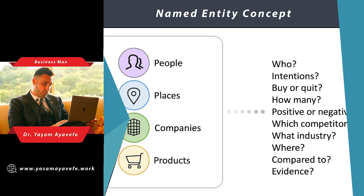Lexical semantic disambiguation is one of the biggest challenges in natural language processing. Indeed, natural language, unlike formal or programming languages, is fundamentally ambiguous. The principle of vocabulary disambiguation — lexical semantic disambiguation — takes its full meaning and remains a problem to be solved.